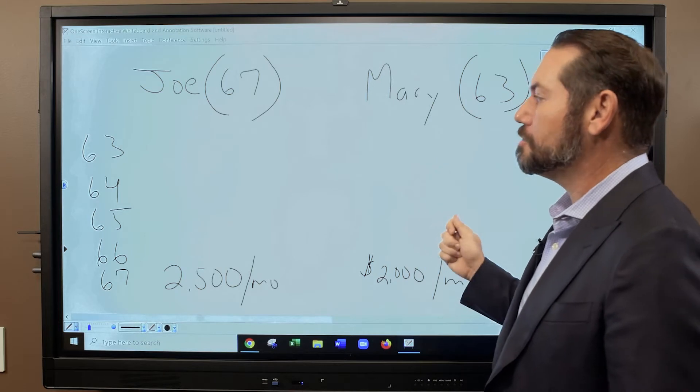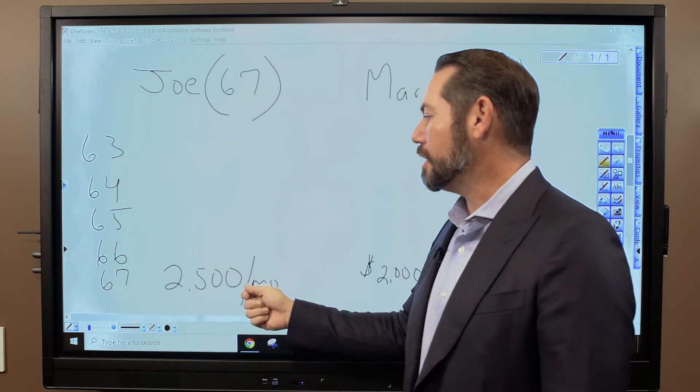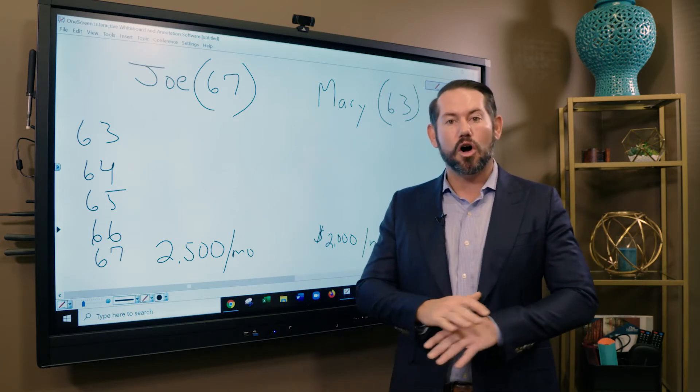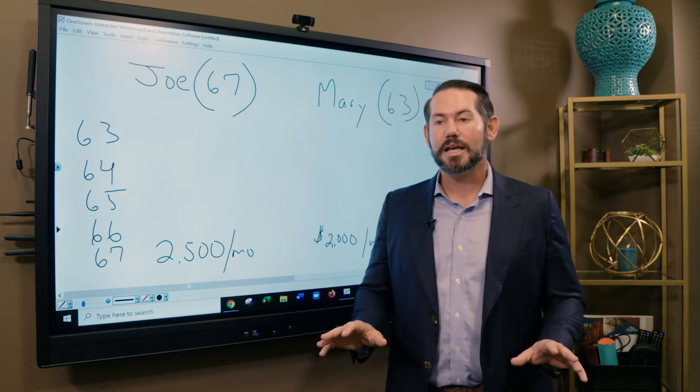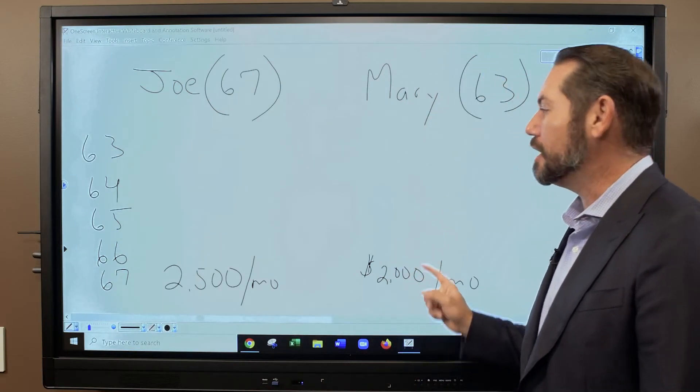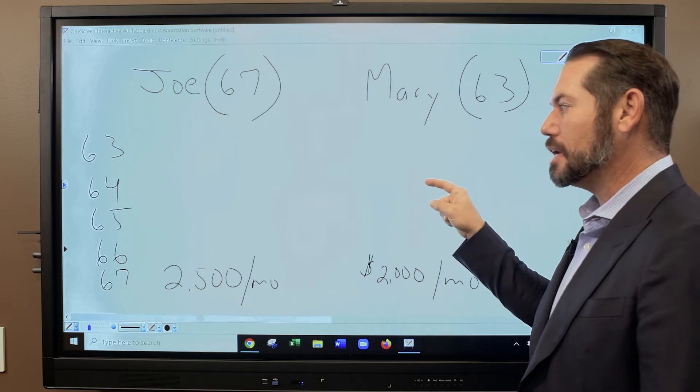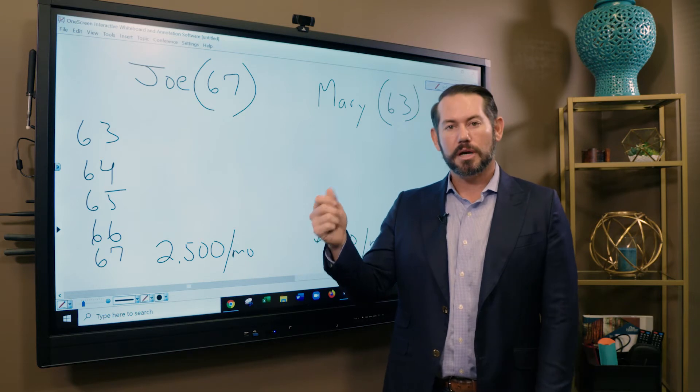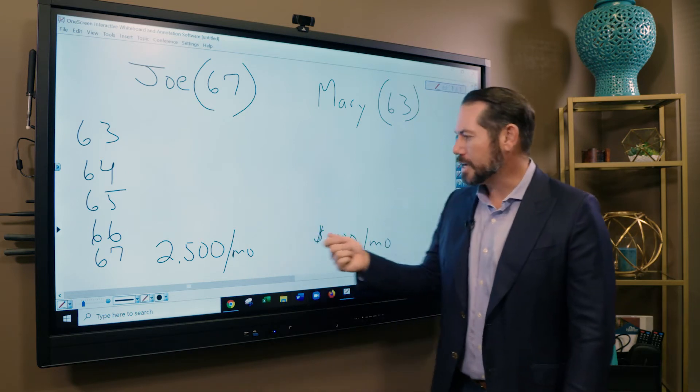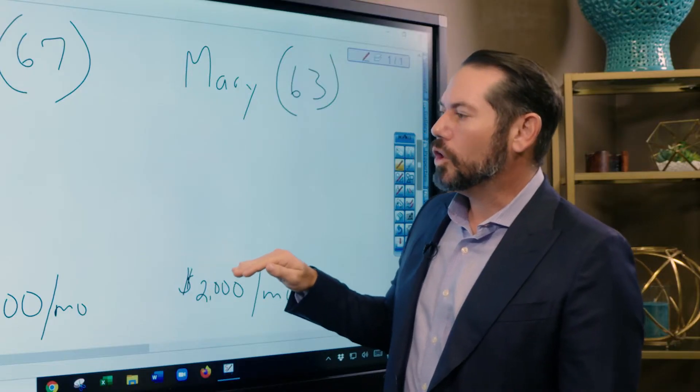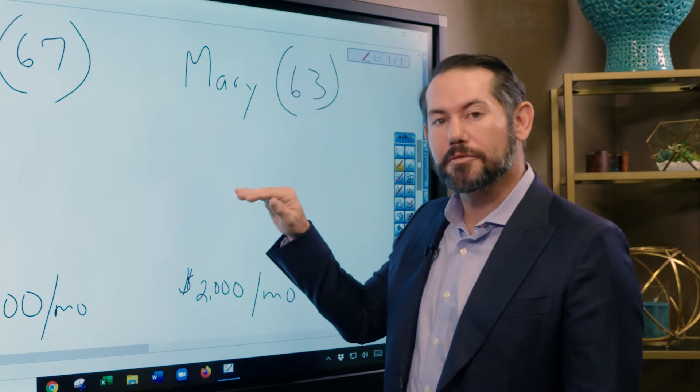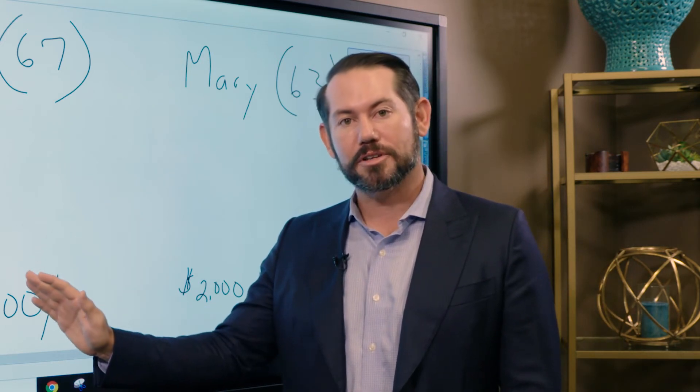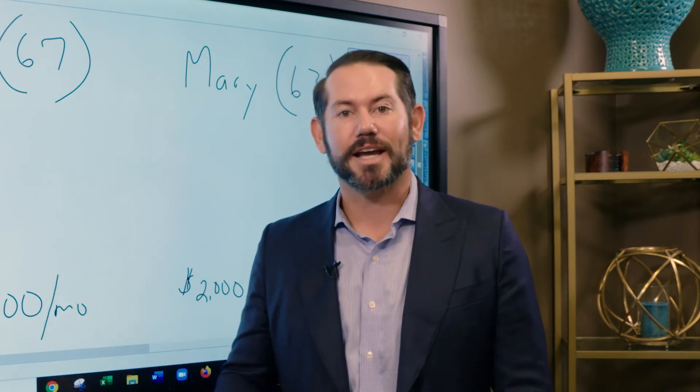So if Mary tries to file a restricted application or a spousal benefit, the Social Security Administration will deem her to have filed for any and all benefits available to her. This means that she will get her personal benefit early. It will be permanently reduced. And if she is eligible for a small spousal benefit, it could go on top of her personal benefit. But in this particular instance, I believe that's unlikely. So Mary will have permanently reduced her benefit because she is not eligible to file for a restricted application on the spouse's because she was born on or after January 2nd, 1954.